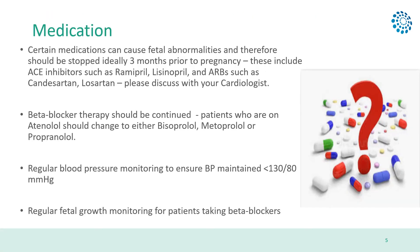Some medications that are often used in patients with heritable thoracic aneurysm disease are associated with an increased risk of development of fetal abnormalities. The most common of these are the ACE inhibitor drugs and angiotensin receptor blocker drugs such as Ramipril, Lisinopril, Candesartan, Losartan and Irbesartan. This risk has to be balanced against the risk for the mother if the medications are stopped.